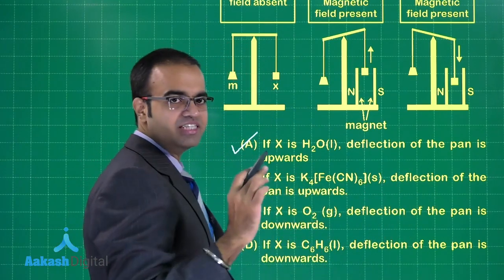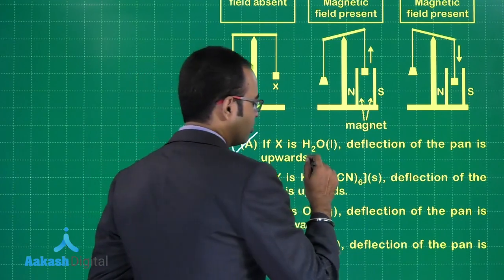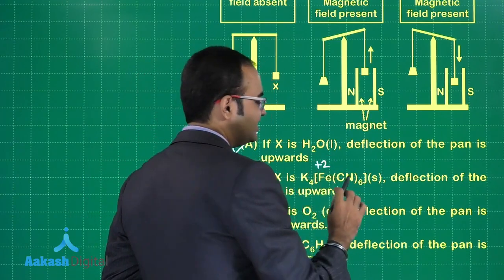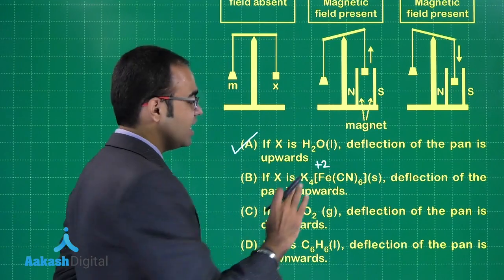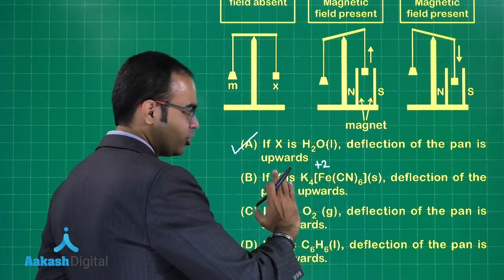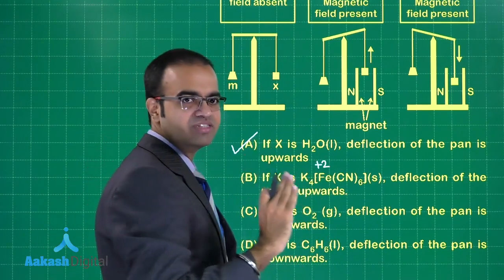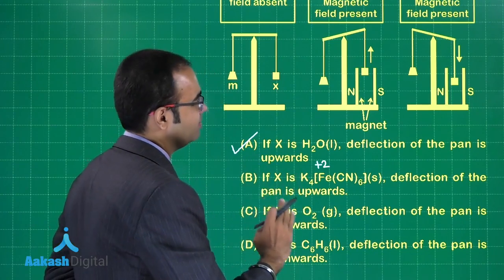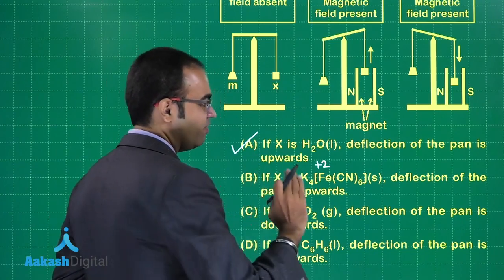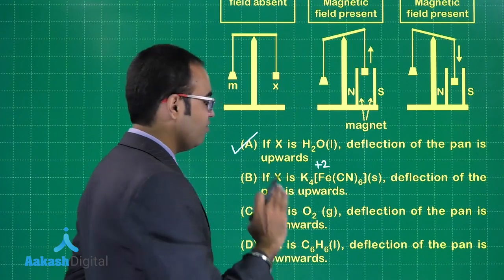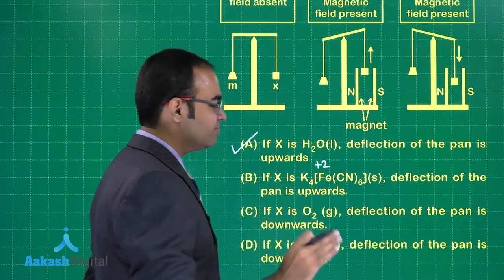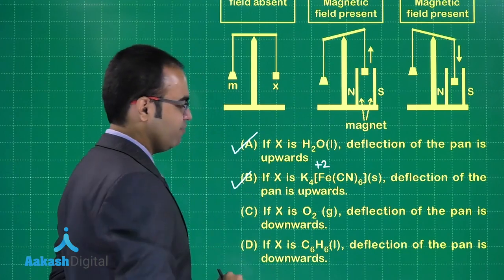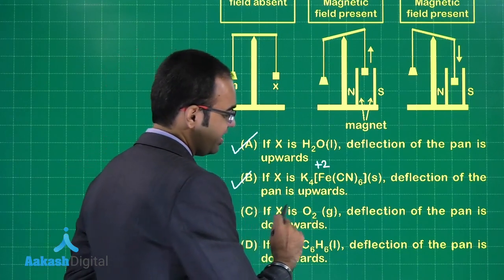What would be the oxidation state of Fe in K₄[Fe(CN)₆]? The oxidation state of Fe is +2. CN⁻ is a strong ligand, so it will force the pairing of electrons. If all the electrons are paired, then this compound will show diamagnetic character, meaning this will also be deflected upwards.